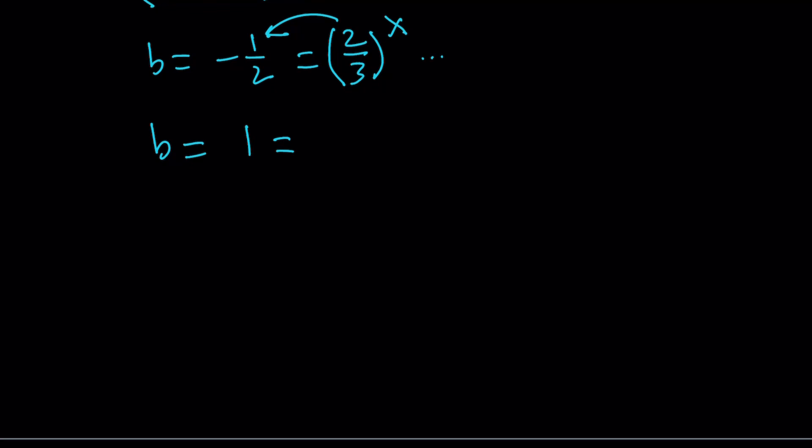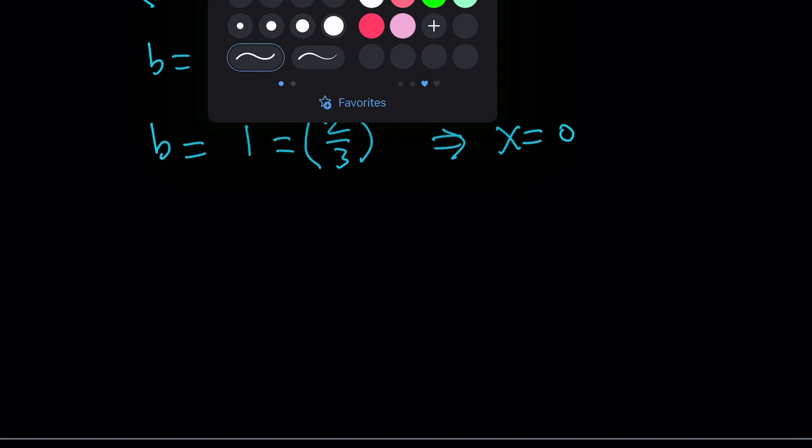So, that doesn't give us something real. We're going to go with the second one. If you set 2 thirds to the power x equal to 1, you know this. This means x is equal to 0. And guess what? This turns out to be the only solution.